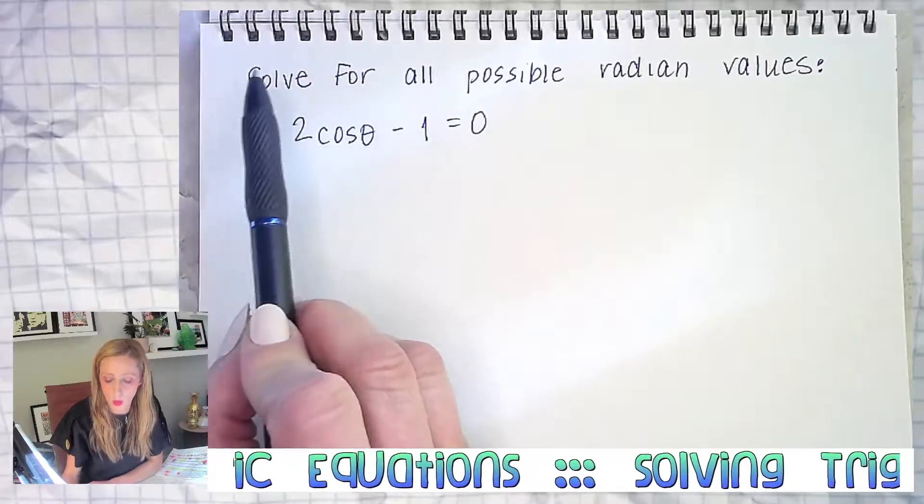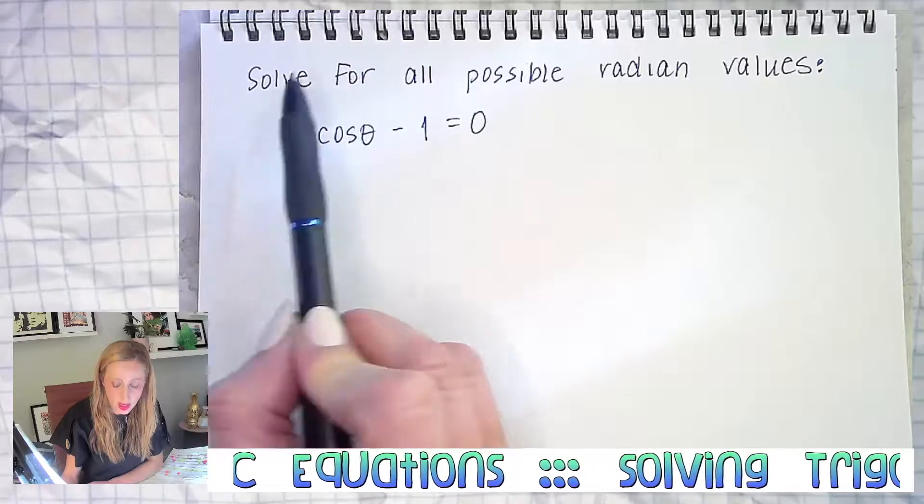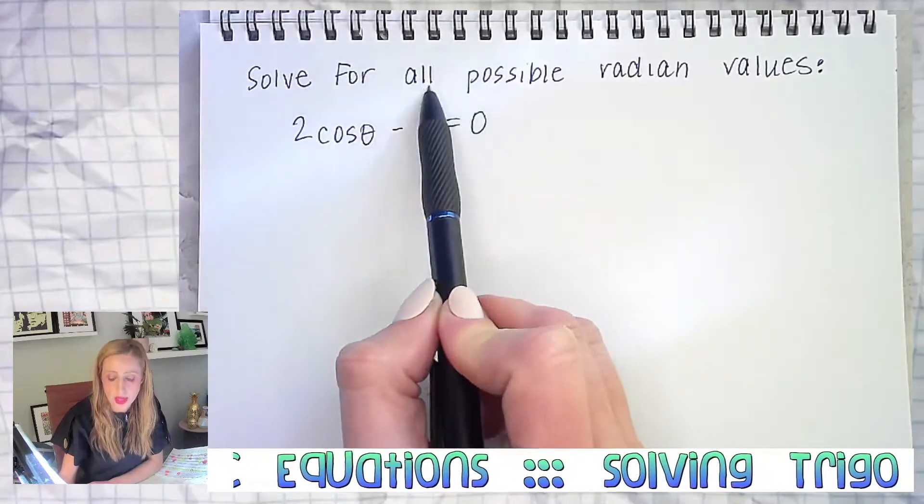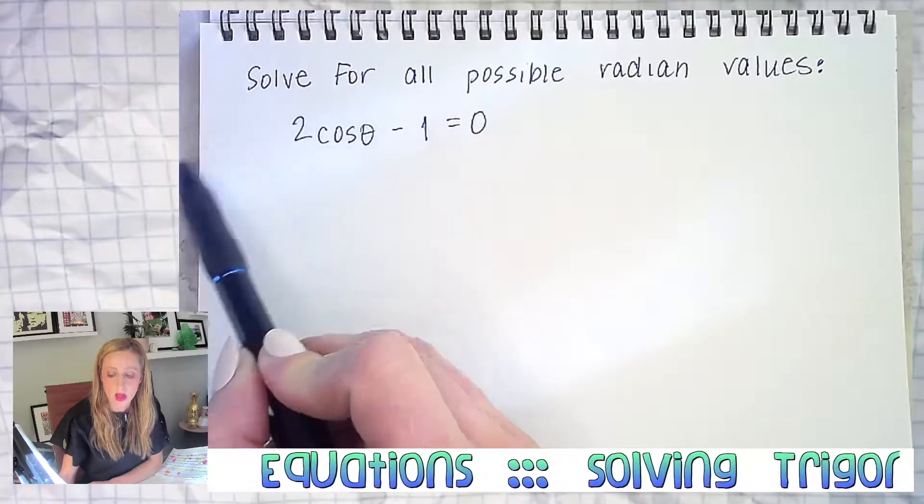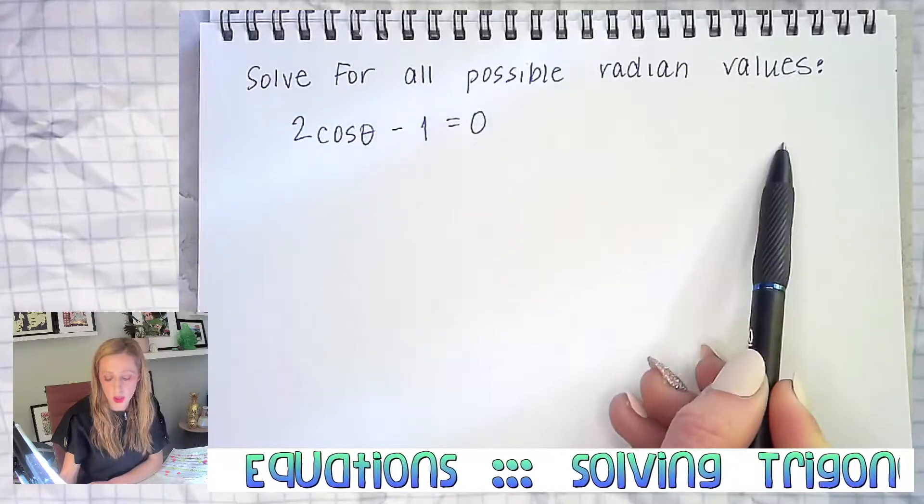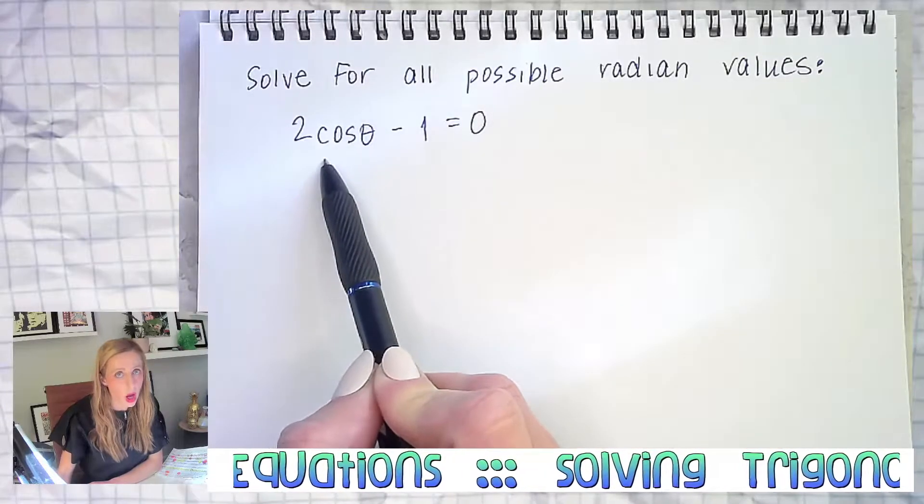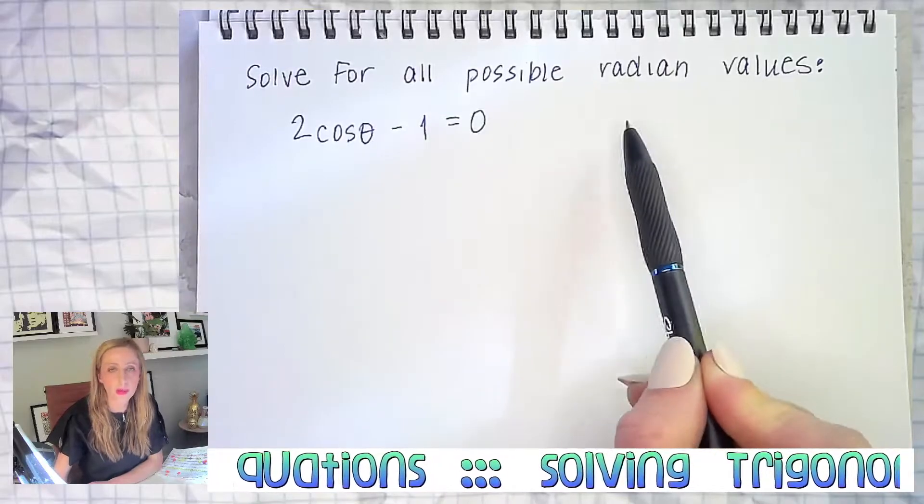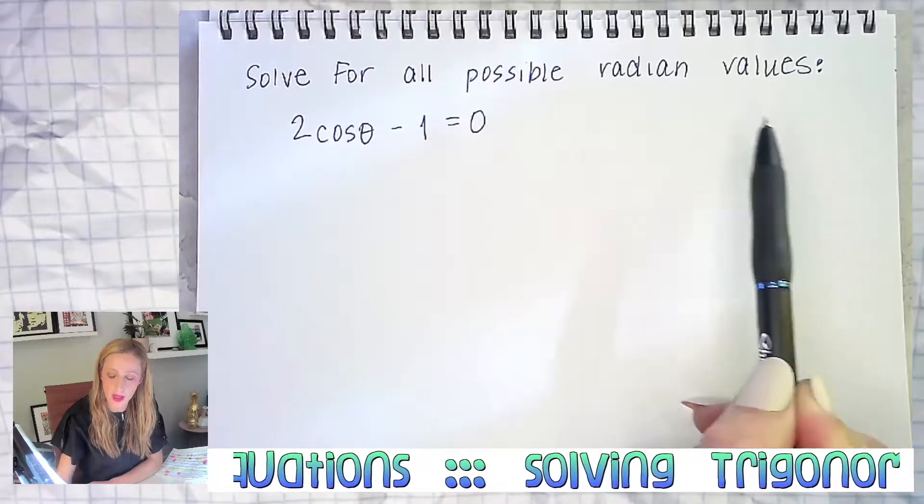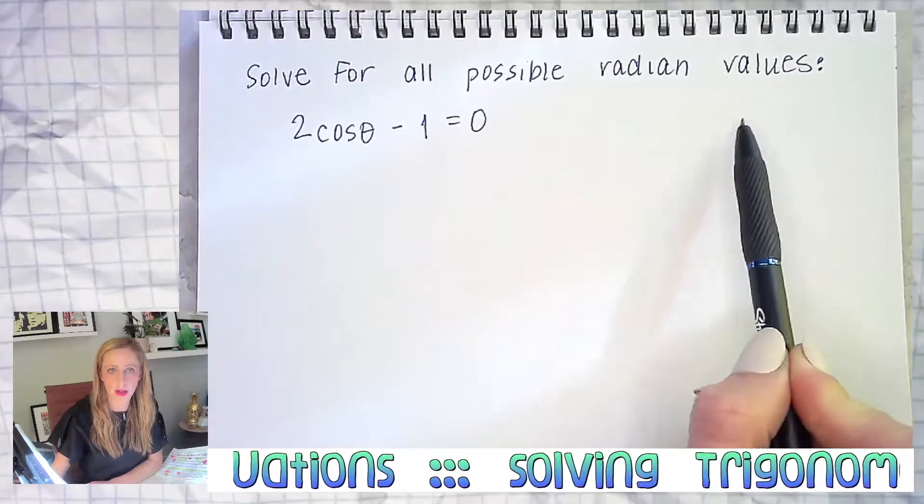In this example we're going to do things a little differently. Up until now, the other examples would say solve the following trigonometric equation on the interval or in the interval from zero to two pi, so that was a restricted area.